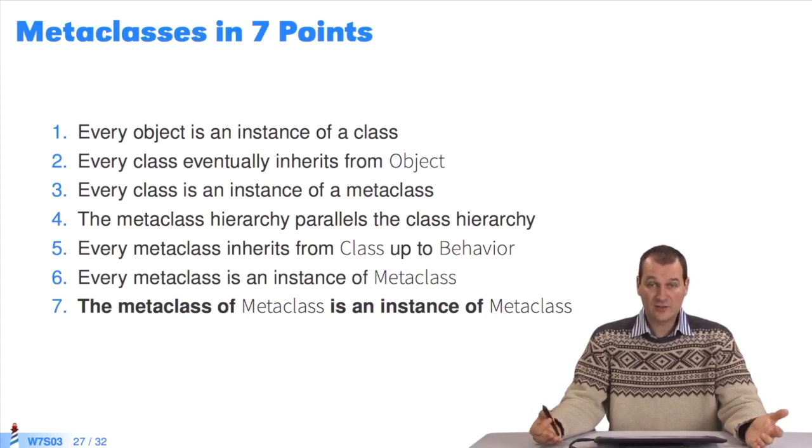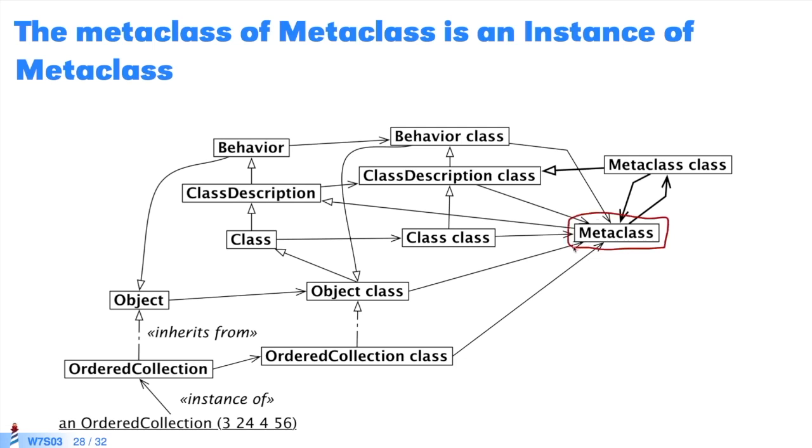There's only one question left to answer. What is metaclass an instance of? Because metaclass is a class, like ordered collection. It is an instance of the class metaclass class. You'll see that metaclass inherits from class description. Therefore, metaclass class inherits from class description class. Ordered collection class inherits from object class, as ordered collection inherits from object. So, metaclass is an instance of metaclass class. Ordered collection is an instance of ordered collection class. And metaclass class is an instance of metaclass. Just as class class and object class are instances of metaclass.